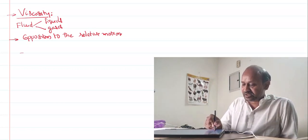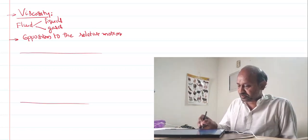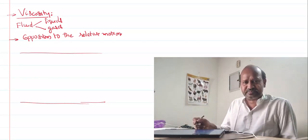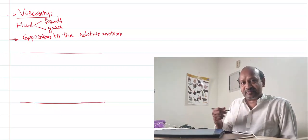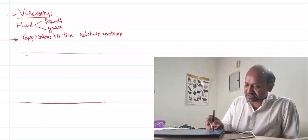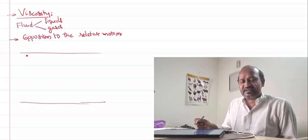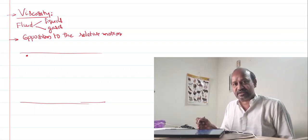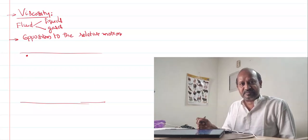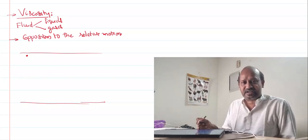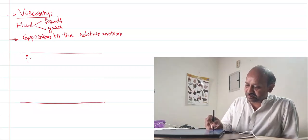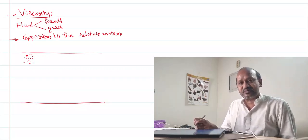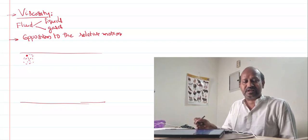Let us consider a fluid — whatever fluid it is, like water, anything. This fluid is full of molecules. When you consider one molecule, that molecule has a kind of force of attraction on the neighboring molecules. Because these are molecules of similar nature, that kind of force of attraction is called cohesive force of attraction. This molecule attracts its surrounding molecules, and while the fluid is moving, all these molecules move together like a set, like a layer.